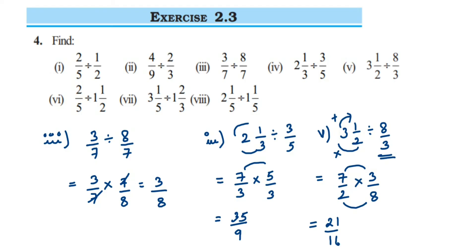If you want, you can convert 21 upon 16 — which is an improper fraction — into a mixed fraction. 16 ones are 16, and you need 5 more to get 21, so you get 1 and 5 by 16. Both answers are the same; you can stop at 21 upon 16.